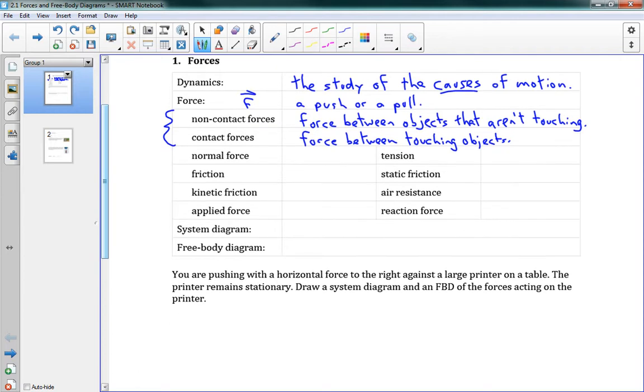We've got a list here of a whole bunch of different forces, and we're just going to put down their symbols. So, normal force, we call that Fn. Tension, Ft. Friction, Ff. Static friction, Fs. Kinetic friction, Fk. Air resistance, Fair. Applied force, Fa. And reaction force, Fr.